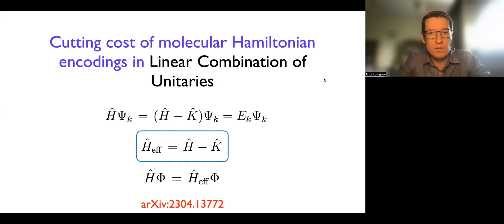Hello, everyone. So in this video, I would like to highlight our recent work on cutting cost of molecular Hamiltonian encodings for linear combination of unitaries. And so for people who are familiar with this approach, just want to start with a small summary. What do we really achieve here?